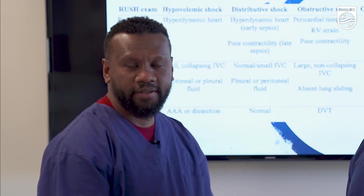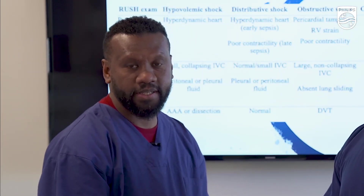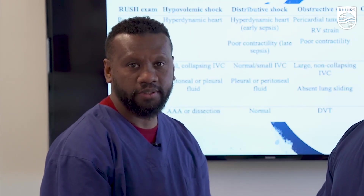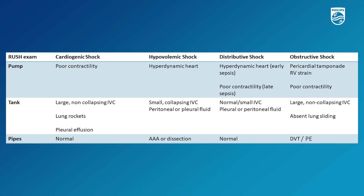By now the cause of the hypotension would probably be fairly self-evident if you've followed through the RUSH protocol. However, it is useful to summarize the different types of shock states you're looking for. There are about four states we're looking for specifically: hypovolemic shock, distributive shock, obstructive shock, and cardiogenic shock.